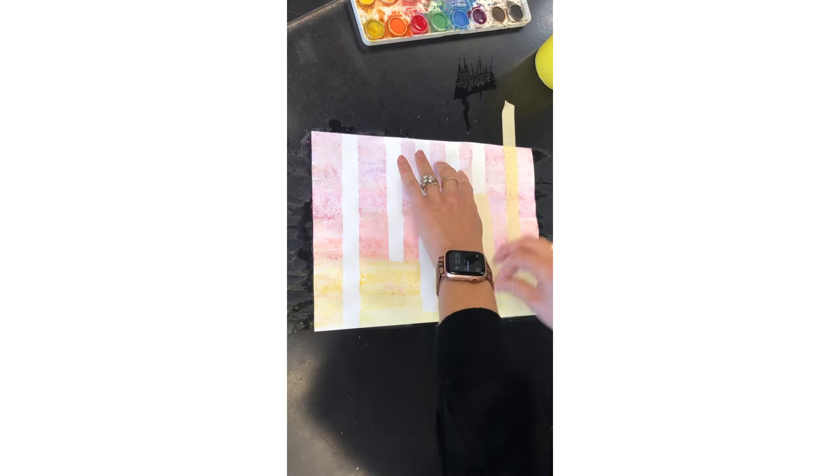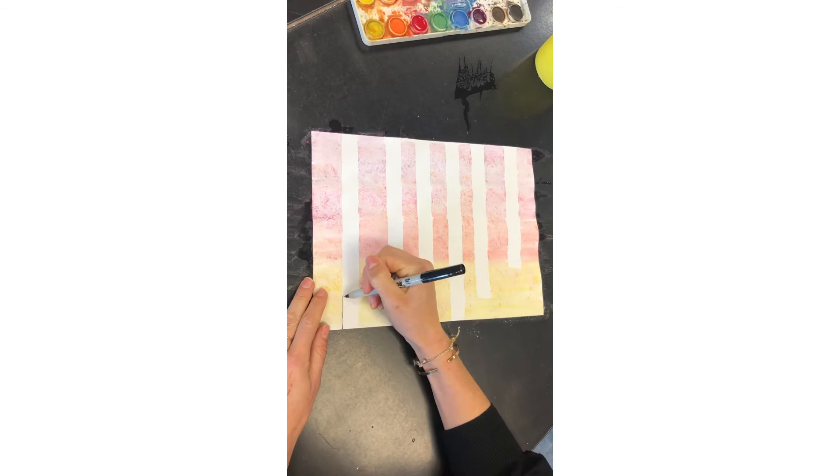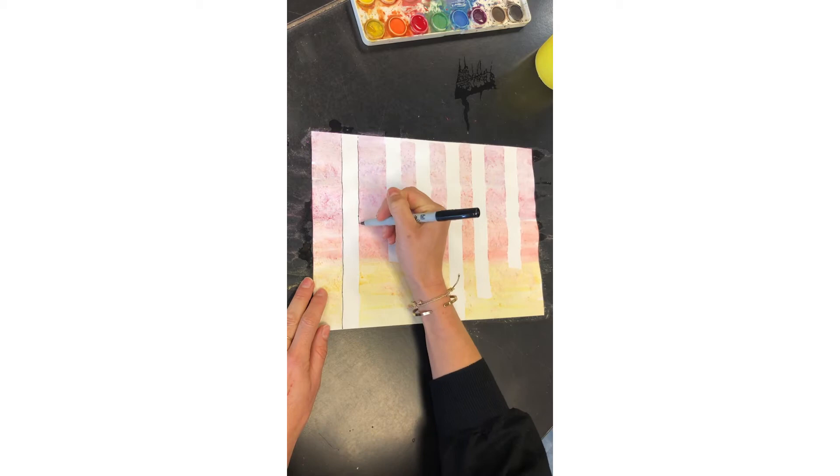Now I'm going to use a black marker to outline the trees and add a little bit of texture. For the younger grades you can skip this part.